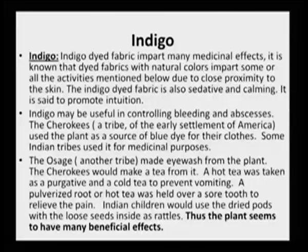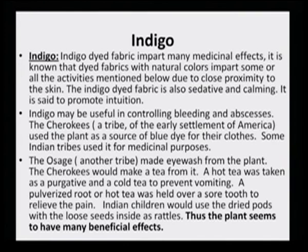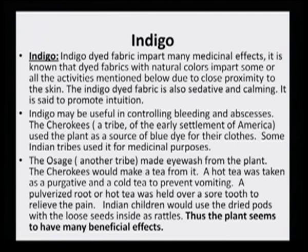Indigo may be useful in controlling bleeding and abscesses. The Cherokees, a tribe of early settlements of America, used the plant as a source of blue dye and for medicinal purposes. The Osage tribe made eye wash from the plant. The Cherokees would make a tea from it — a hot tea was taken as a purgative and a cold tea to prevent vomiting. A pulverized root or hot tea was held over a sore tooth to relieve pain.